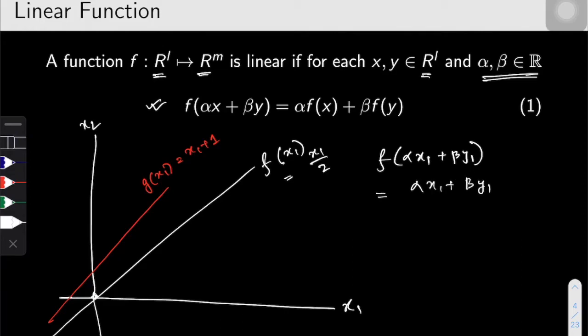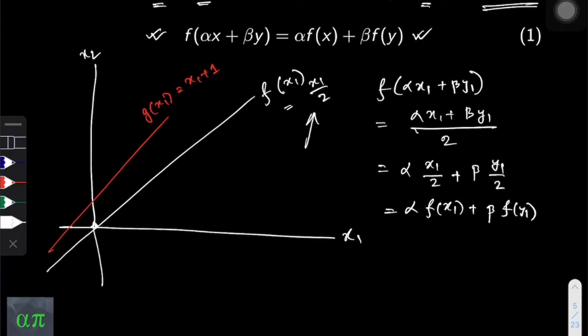Because this is f of x₁, so we can write it like this. And then I can break it down into alpha x₁ by 2 plus beta y₁ by 2, which is basically alpha f of x₁ plus beta f of y₁, which is basically saying that it follows this definition. And hence f is a linear function.